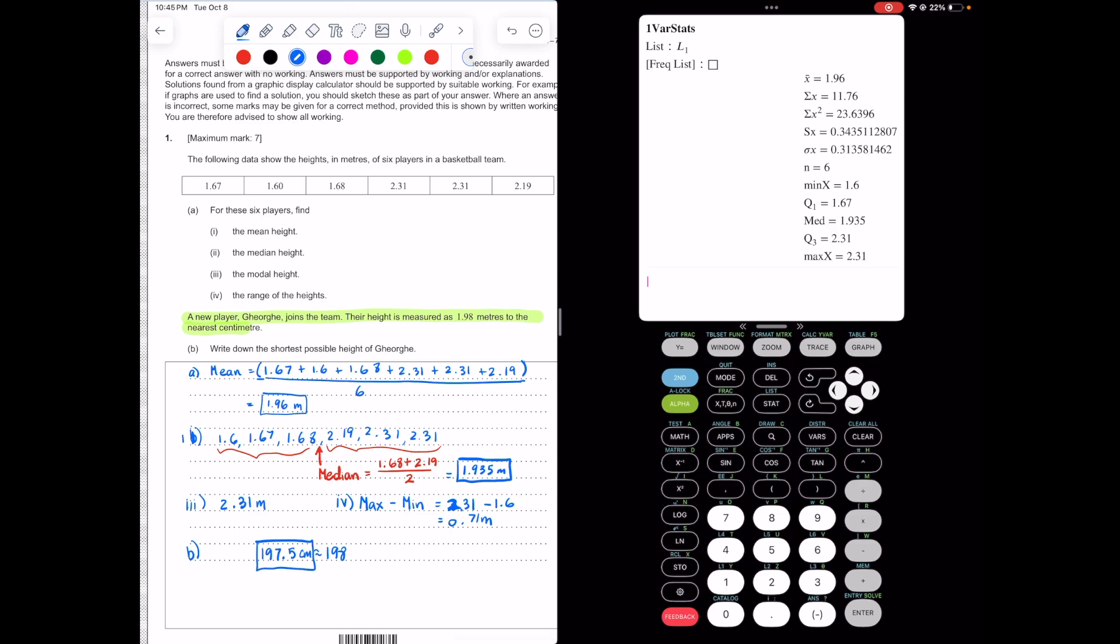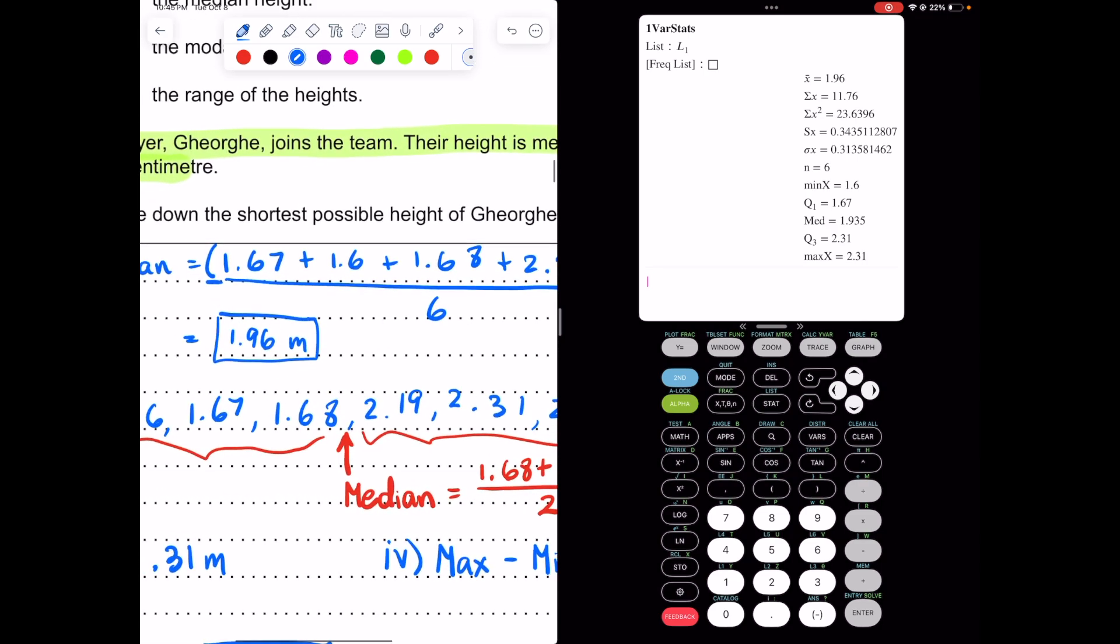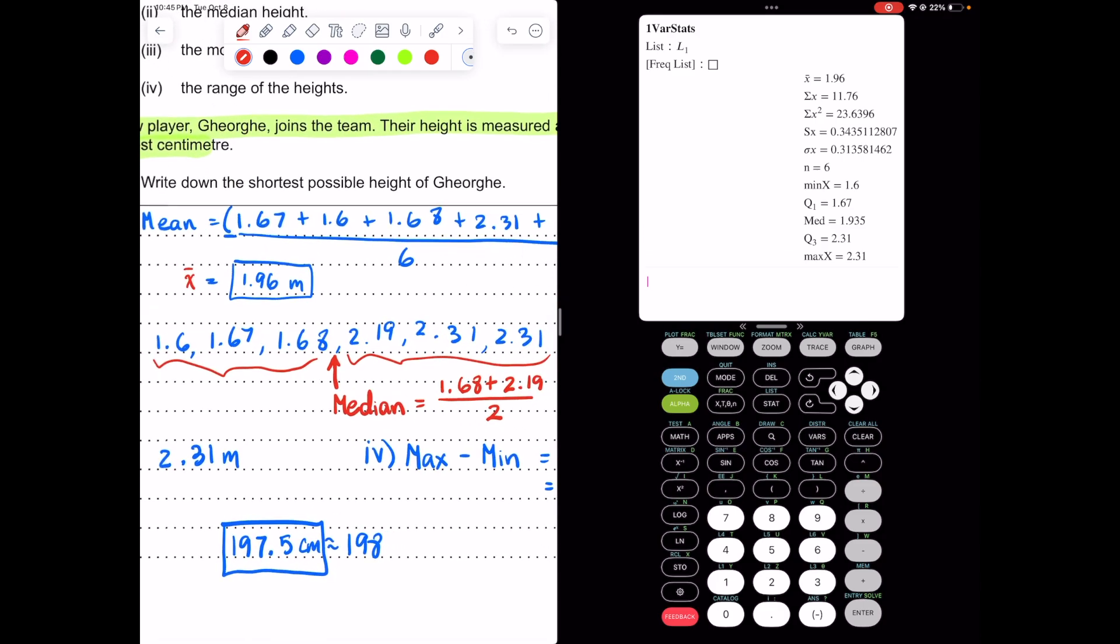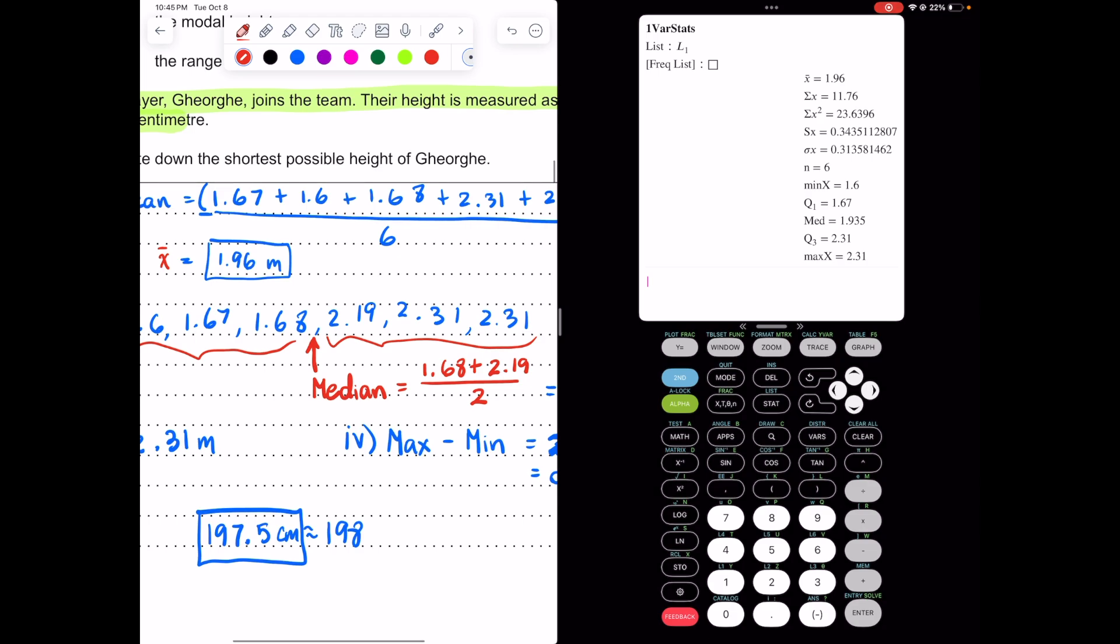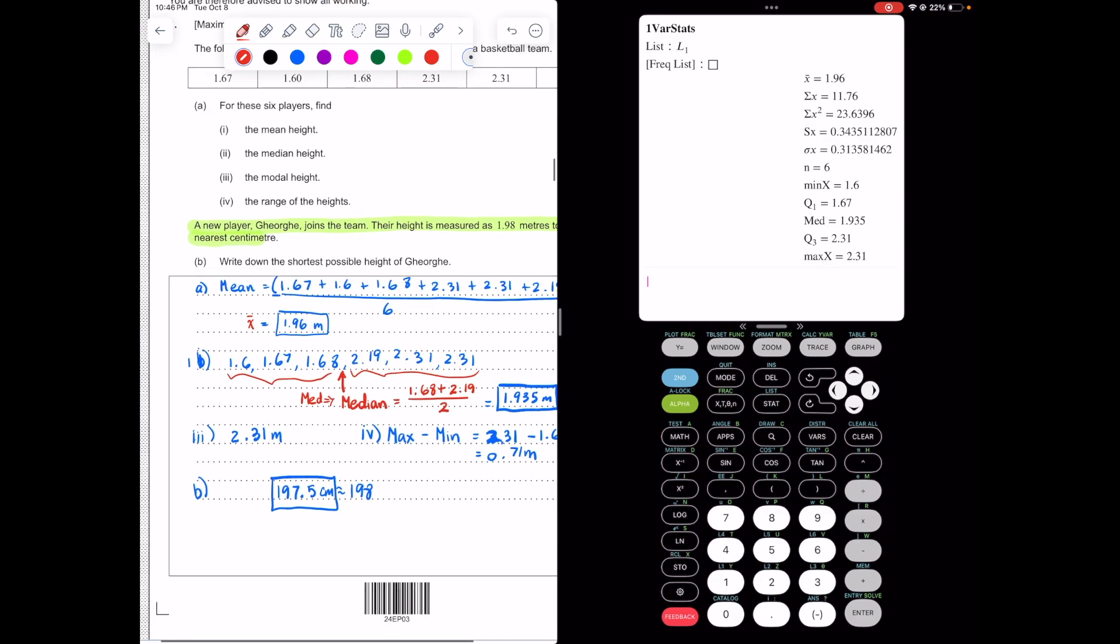And so we already have these numbers. But notice there is an X bar. X bar is the mean. And notice there is something M-E-D. MED is, you guessed it, the median.